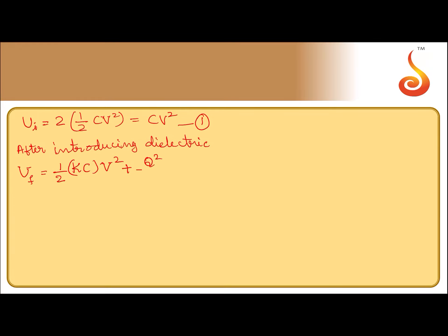It will become Q square divided by 2 times new capacitance is KC. We can take out half CV square where Q is equal to CV, initially whatever the charge was there, that is remaining.